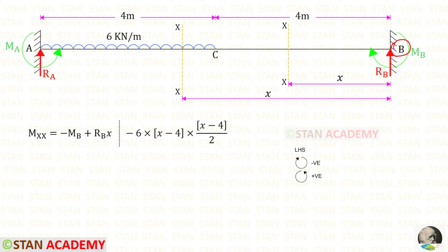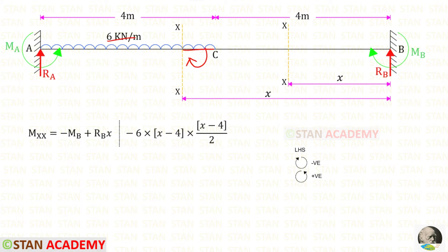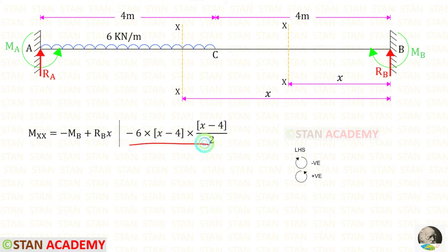In this case we have to follow the left hand side rule: clockwise will be negative and anti-clockwise will be positive. Mb is acting in the clockwise direction so it will be negative. Rb is acting in the anti-clockwise direction so it will be positive and the distance is x. The UDL is acting in the clockwise direction so it will be negative. For the UDL we take the distance x minus 4, and this term is only applicable after point C, so these two terms should be separated by a dotted line.